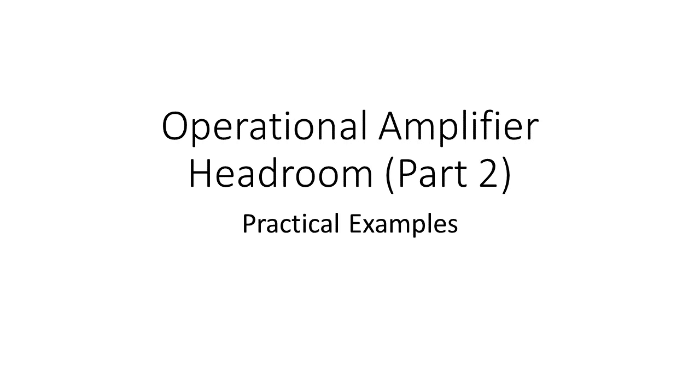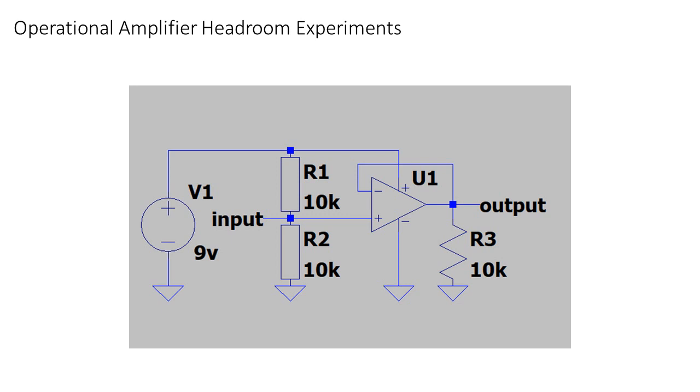First, the LM358. The following schematic is used for the test. The op-amp is wired as a buffer and powered by a single supply of 9V called V1. A voltage divider R1 and R2 determine the input voltage. The output of the op-amp is loaded with the 10K resistor R3.